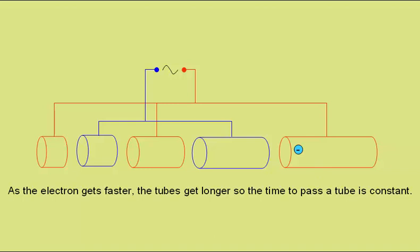So as the electron gets faster, you'll see that the tubes get longer, so the time taken to pass through an individual tube is constant as the electron travels down the linear accelerator. This means that the time period for the alternating potential difference can remain constant.